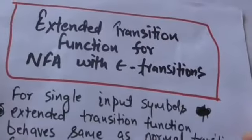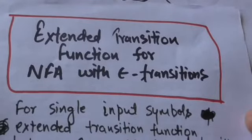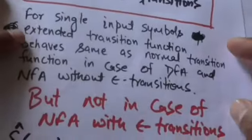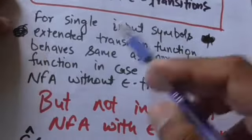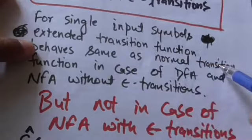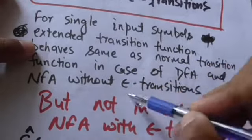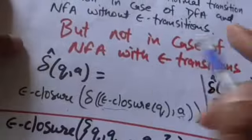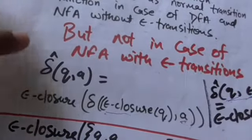Now we will study about the extended transition function for an NFA with empty transitions. For a single input symbol, the extended transition function behaves the same as the normal transition function in the case of DFA and NFA without empty transitions, but not in the case of NFA with empty transitions.